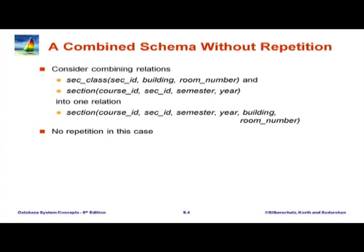Here are two other schemas we got during the ER modeling phase. We had a section weak entity, and to create a relation for the weak entity we had to take the primary key of the identifying entity, which is the course, giving us course ID. Then we had section ID, semester, and year. We also created a relation for the relationship sec_class between section and classroom.